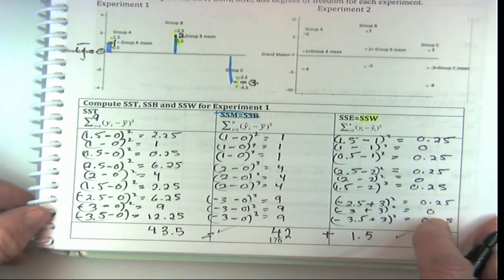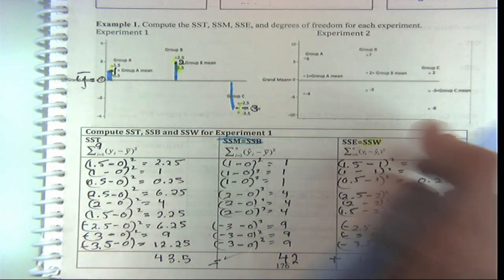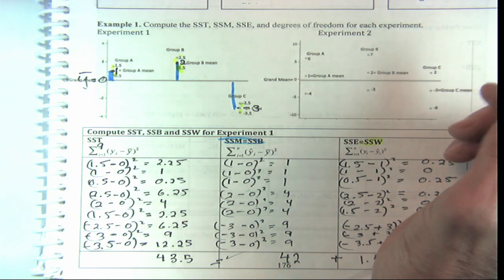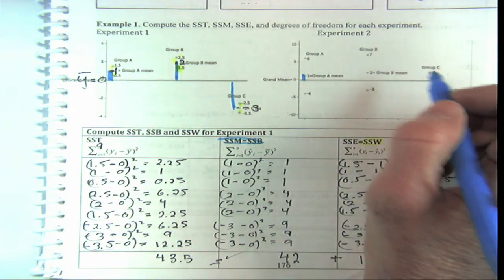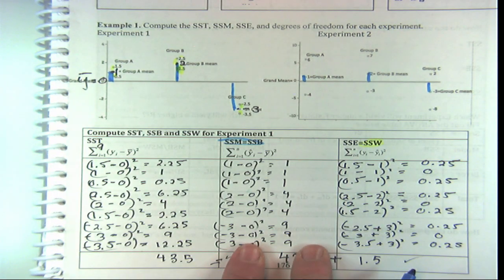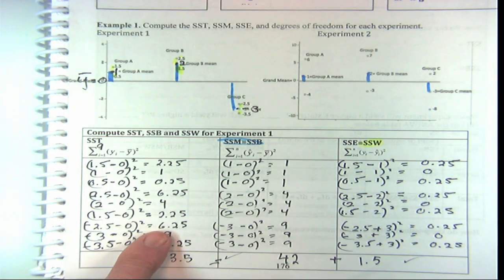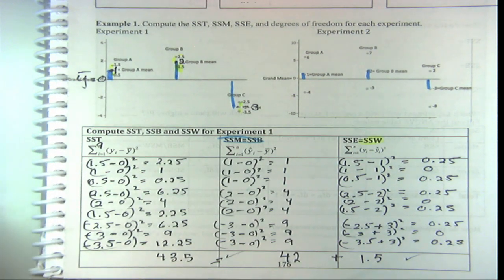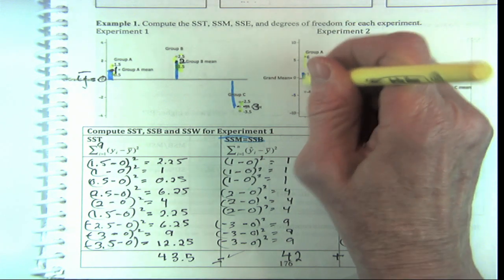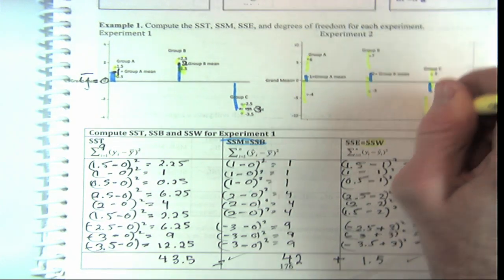For your homework, you're going to do experiment two and you'll see that you get the same SSB — because they have the same group means. But the part that's going to be different is your SST — you'll have different, much bigger variation. And the within-group spread is much bigger in experiment two — like 5 instead of 0.5 for each deviation. When we do an F statistic, we're comparing the between (SSB) to the within (SSW). If SSB is big enough compared to SSW, we'll reject the null.